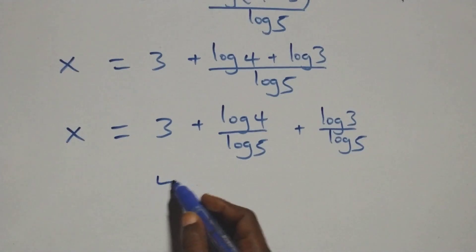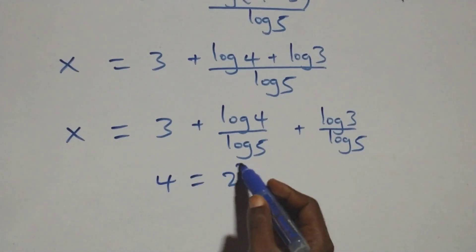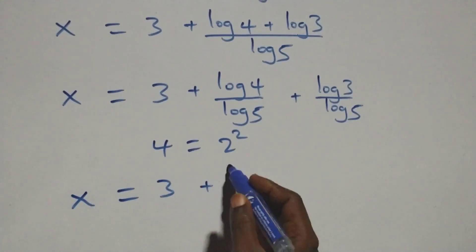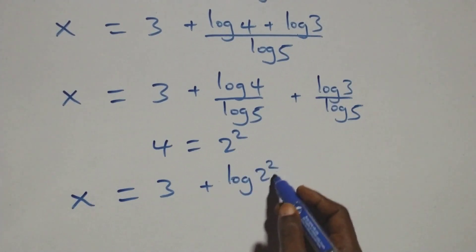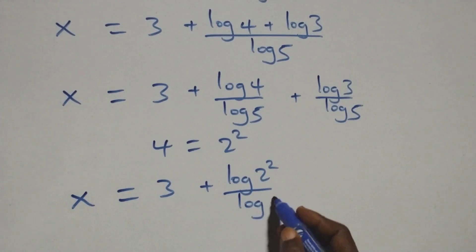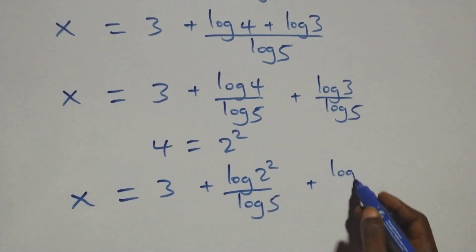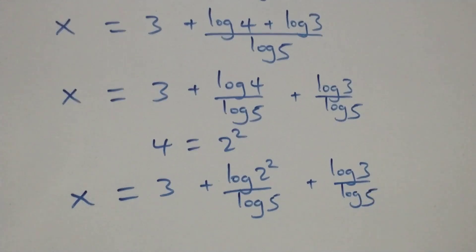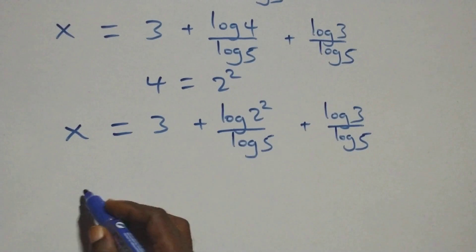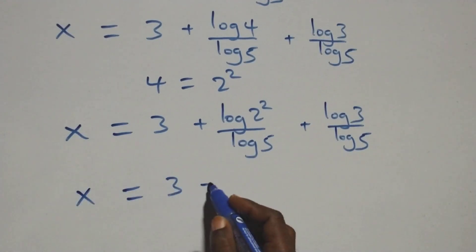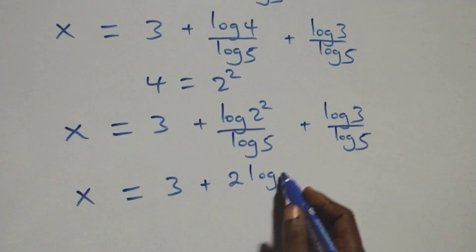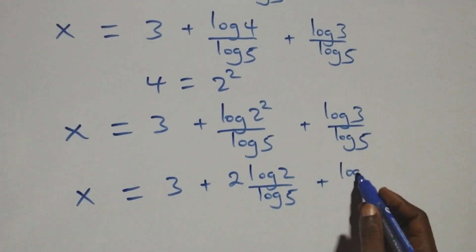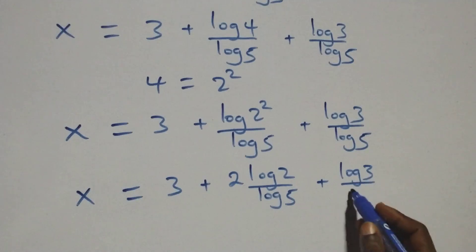Also, 4 can be written as 2 times 2, which is 2 squared. So we have x equals 3 plus log(2 squared) over log 5 plus log 3 over log 5. We apply the power rule of logarithms, bringing the 2 down in front, and we have x equals 3 plus 2 log 2 over log 5 plus log 3 over log 5.